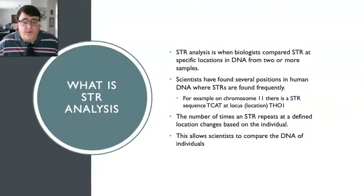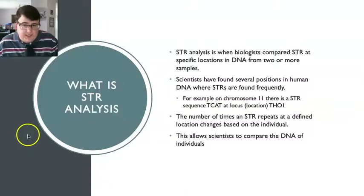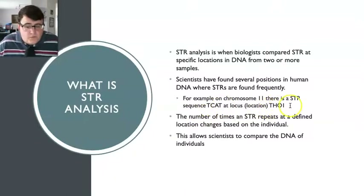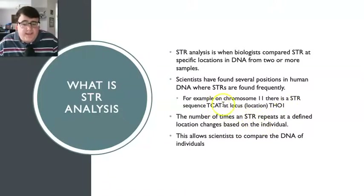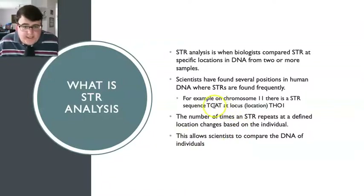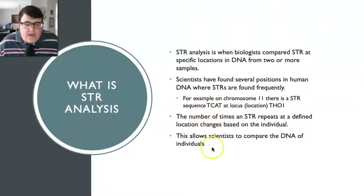Scientists have found several positions in human DNA where STRs are found quite frequently. For example, in chromosome 11 there's an STR sequence TCAT at the location THO1. The number of times that STR TCAT repeats on chromosome 11 is based on the individual — maybe I've got it repeating 15 times, maybe you've got it repeating 16 or 17 times. This variation allows scientists to compare the DNA of individuals.